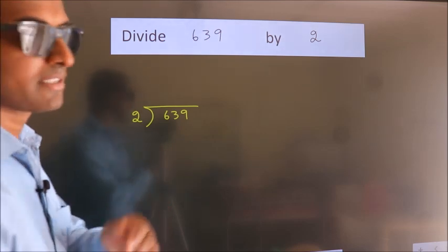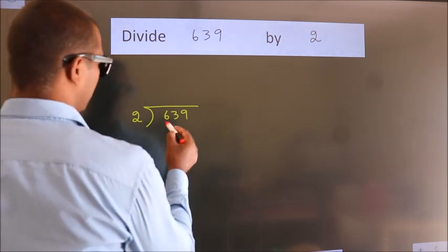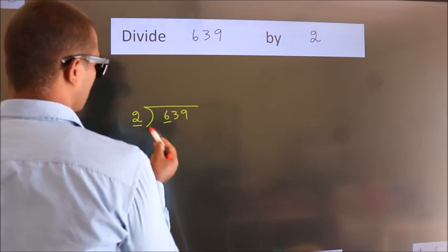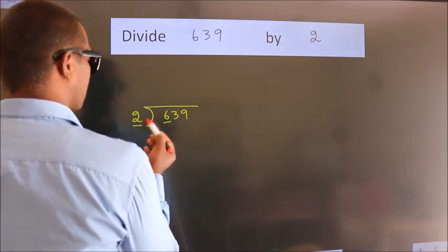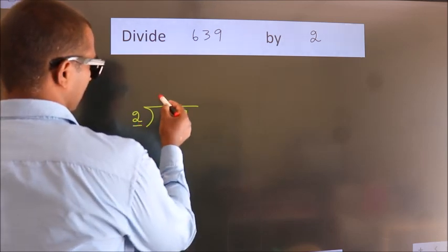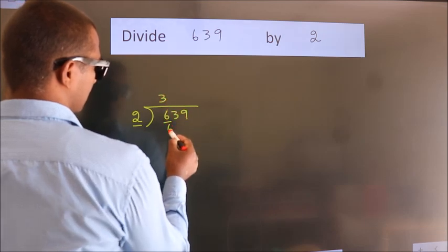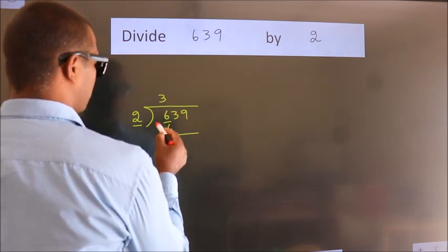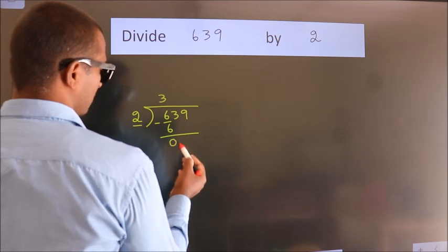Next. Here we have 6. Here 2. When do we get 6 in 2 table? 2 times 3 is 6. Now we should subtract. We get 0.